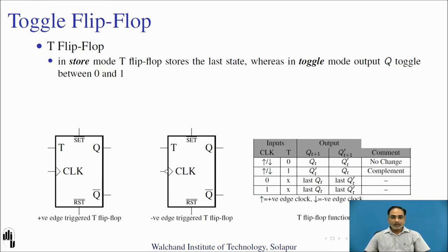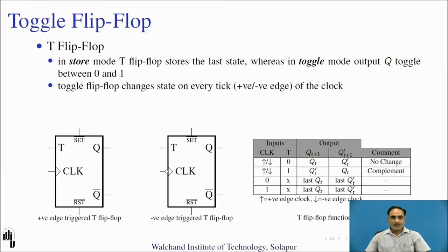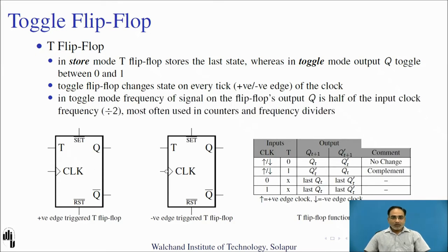T flip-flop comes with two modes: store mode and toggle mode. In store mode, the T flip-flop stores the last state, whereas in toggle mode the output always toggles between 0 and 1. The toggle flip-flop changes its state on every clock edge, so in toggle mode the frequency of Q is half of the input clock frequency — divided by 2.